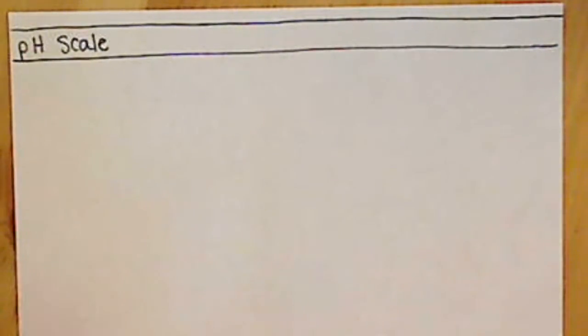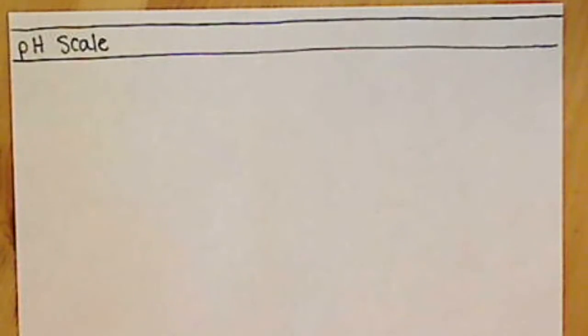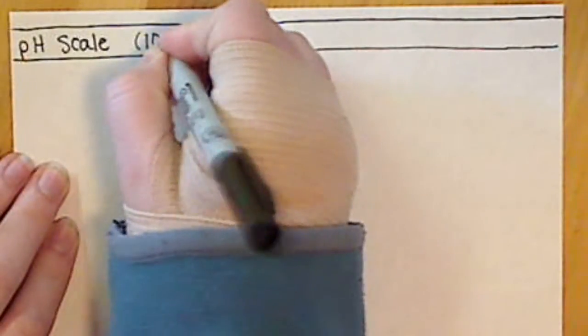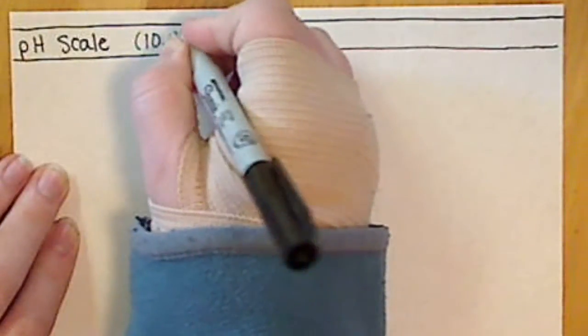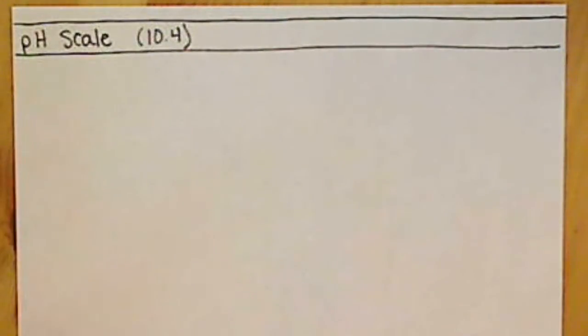Although it's not that difficult to compare those concentrations to figure out which one's higher — the concentration of H₃O⁺ or the concentration of OH⁻ — we've developed what we call the pH scale, which makes it a little bit more user-friendly to determine whether or not a solution is acidic, basic, or neutral.